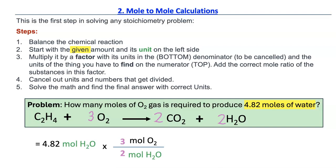And for water, it will be 2. Now, you cancel out the units and the values that get canceled out or divided by each other. So, moles of H₂O gets divided by each other.